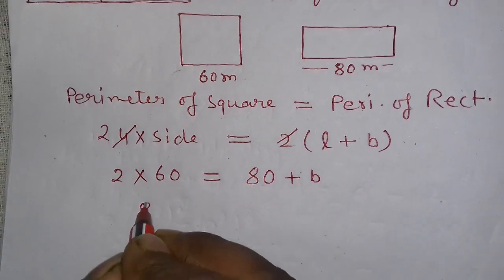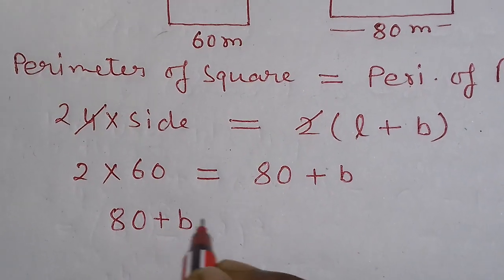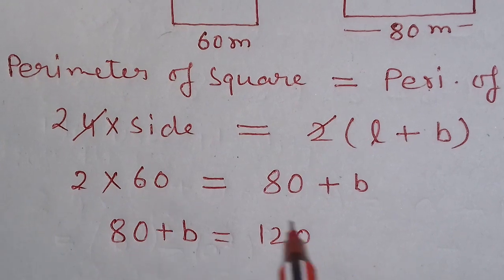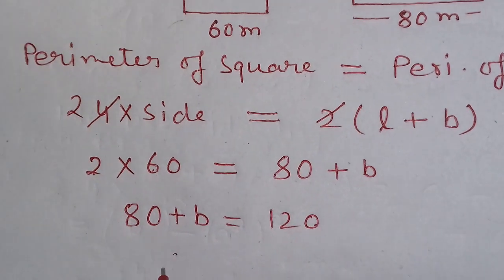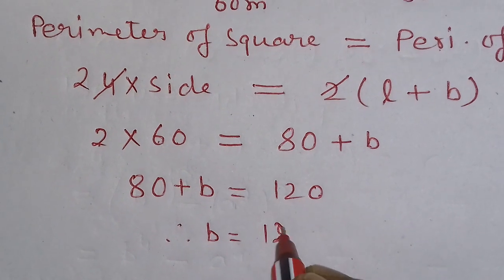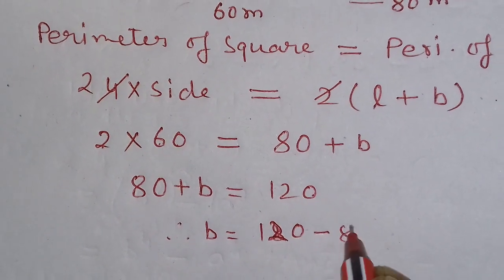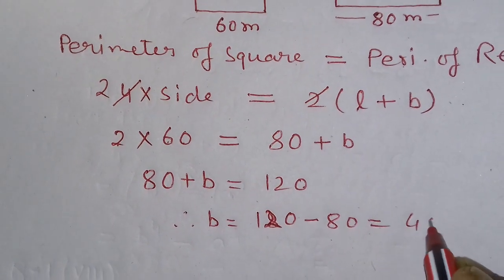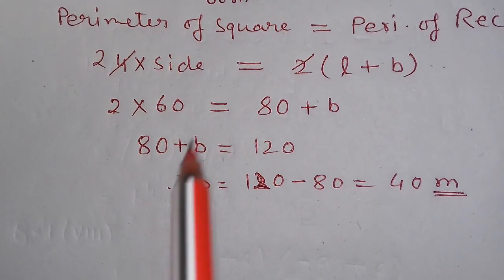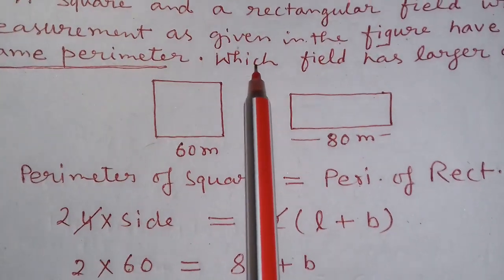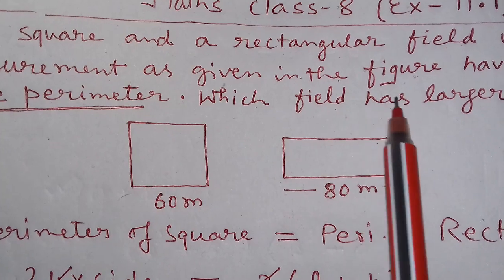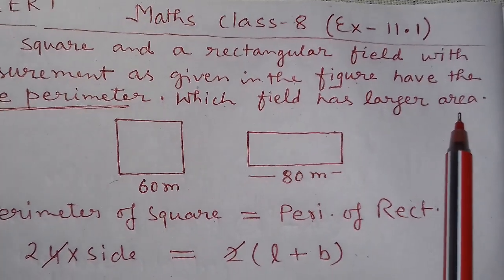Now 80 plus b is equal to 120, 6 to 12 and 1 0 is here. Therefore b is equal to 120 minus 80, that is 40 meter. Now question wants another answer, which field has larger area.